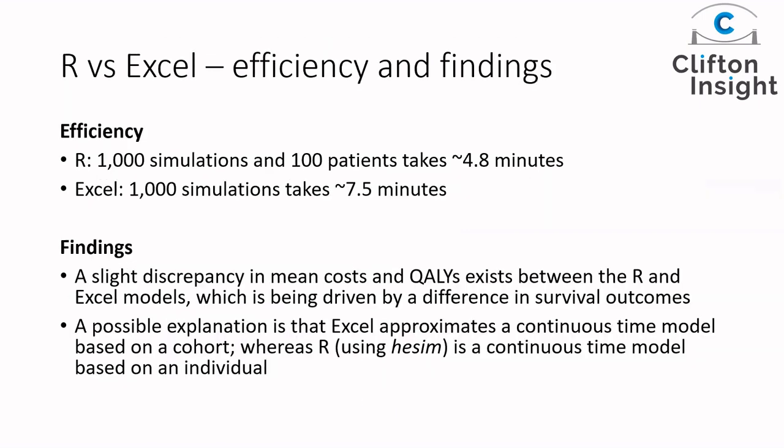In terms of efficiency, the R model takes about five minutes to simulate a thousand samples with a hundred patients. The Excel model takes about seven and a half minutes for a thousand simulations. It's a little bit longer, but once we resolve the memory issue, they may be around the same time. We found a slight difference in mean costs and QALYs between the Excel and R models, possibly because one is a continuous-time individual-level model and the other is an approximation using a cohort. We're still exploring whether there's anything else contributing to the discrepancy.